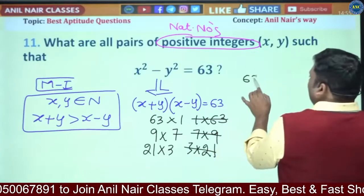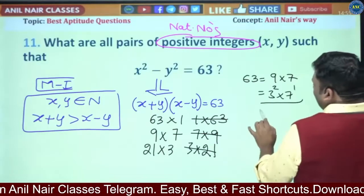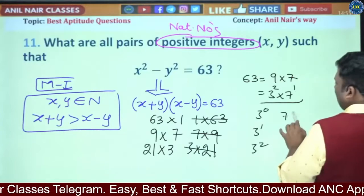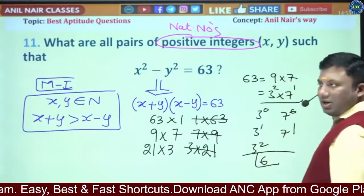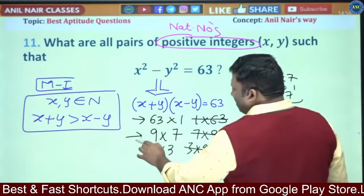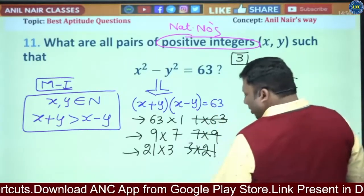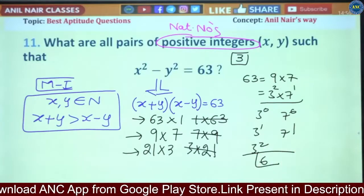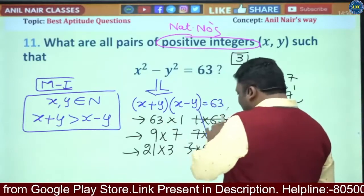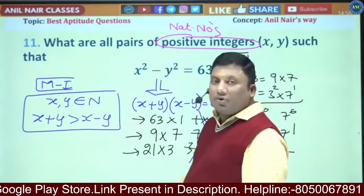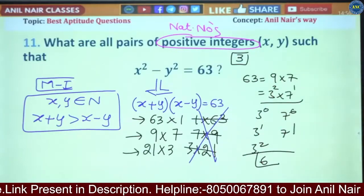63 equals 3 squared times 7 to the power 1. Total factors: (2+1)(1+1) = 6 factors. We got 3 valid cases and 3 eliminated cases. The 3 eliminated cases have x+y less than x-y, which is impossible for natural numbers. So the answer is 3 pairs of positive integers.